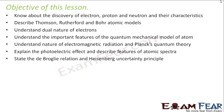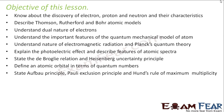We will state the de Broglie relation and Heisenberg's uncertainty principle. We will define atomic orbitals in terms of quantum numbers. We will state the Aufbau principle, Pauli's exclusion principle, and Hund's rule of maximum multiplicity. We will also learn how to write the electronic configuration of atoms. So having said this, we will start the chapter.